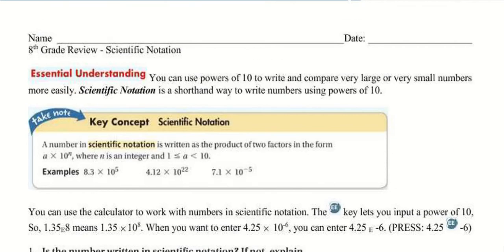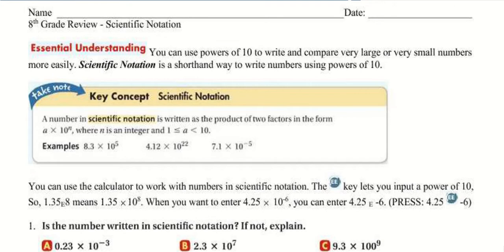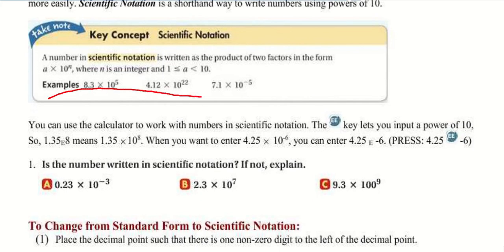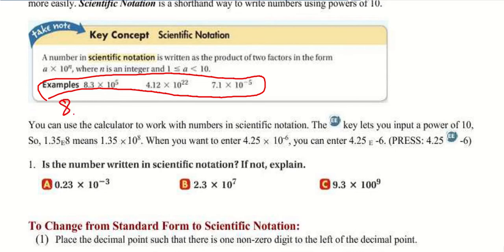So in scientific notation, this is a way to write numbers — very either large or small numbers — using powers of 10. It's a shorthand way to write these numbers. It is a way to write the product of two factors in the form of A times 10 to the N, where N is an integer and A is usually between 1 and 10. It can be bigger or smaller — so it could be negative or positive. For example, 8.3 times 10 to the 5th, which means we're moving the decimal point 5 spaces to the right.